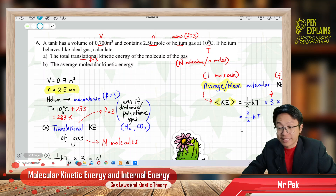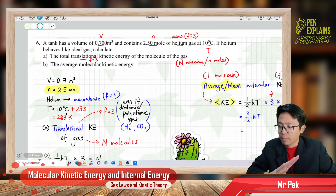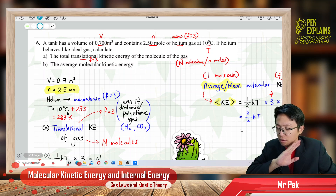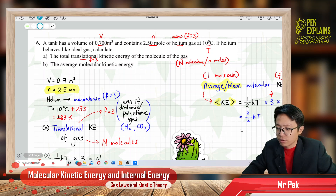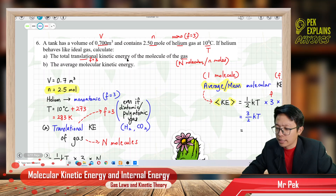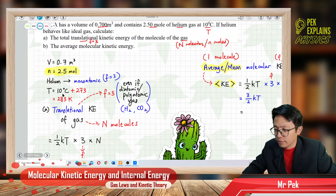Temperature is 10 degrees Celsius. You must change it to Kelvin — all temperatures in this chapter must be changed to absolute temperature in Kelvin before you continue. So, 10 plus 273 gives 283 Kelvin. Now, since the question asks for translational kinetic energy, the degree of freedom F is 3.